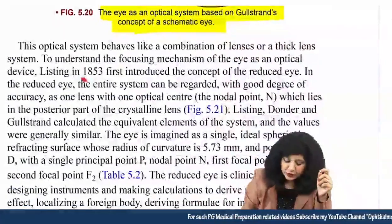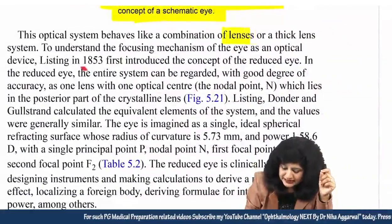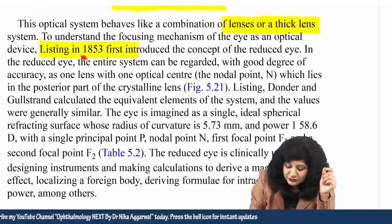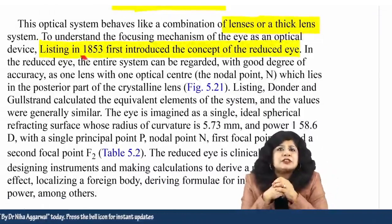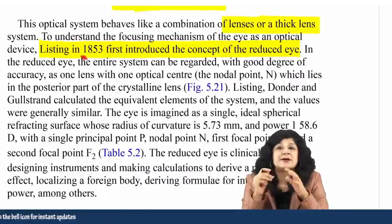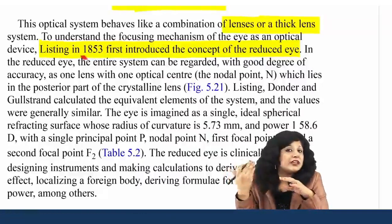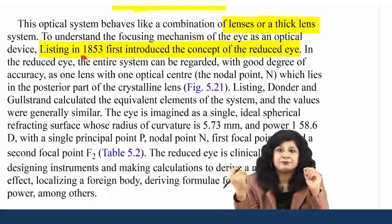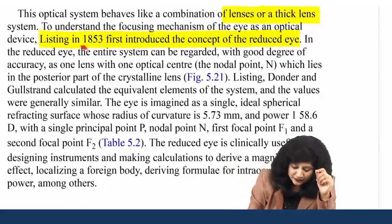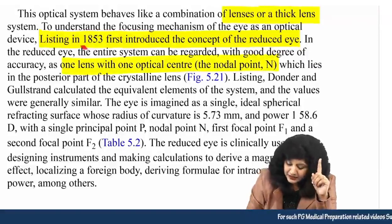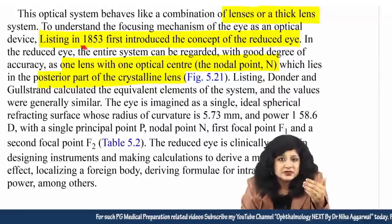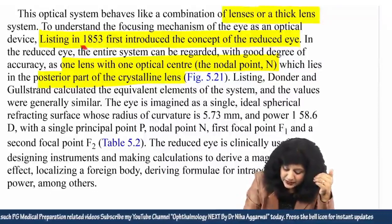The optical system acts as a combination of lenses or a thick lens system. In order to understand the focusing mechanism of the eye, Listing in 1853 first introduced the concept of the reduced eye. He was the first to say that practically you must accept it as a single-point system, because considering everything in twos — two focal points, two principal points, two nodal points — makes the optics messy.